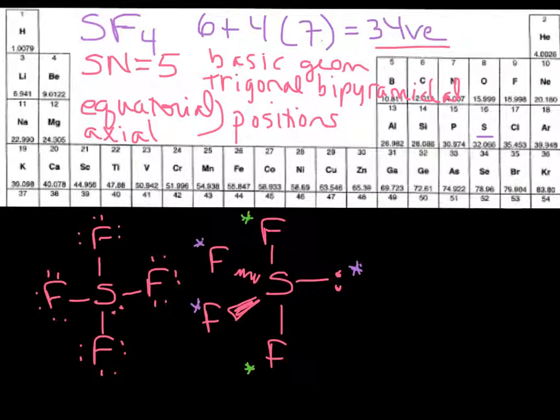And so the bond angle for the axial positions ideally would be 90, but because we have a lone pair, it's going to be less than 90. And the bond angle for the equatorial positions should be right here, that would be 120 ideally, but again, we have a lone pair, and so that bond angle is distorted smaller, so it's less than 120 degrees.